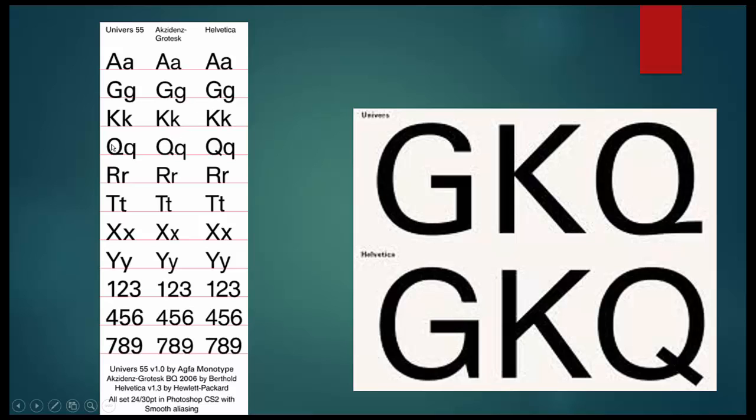You can see the squaring more in Universe and Akzidenz Grotesque, and Helvetica is more round. You can see the base font as well, and the curl.